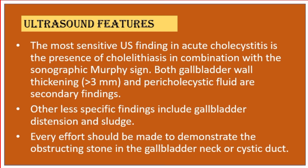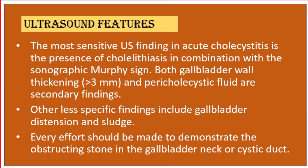Both gallbladder wall thickening of more than three millimeters and pericholecystic fluid are secondary findings. Other less specific findings include gallbladder distension and sludge. Every effort should be made to demonstrate the obstructing stone in the gallbladder neck or cystic duct.